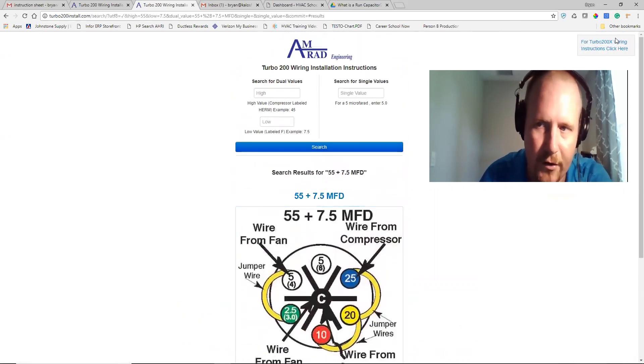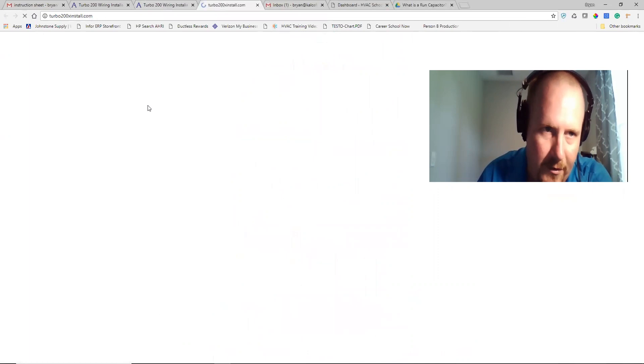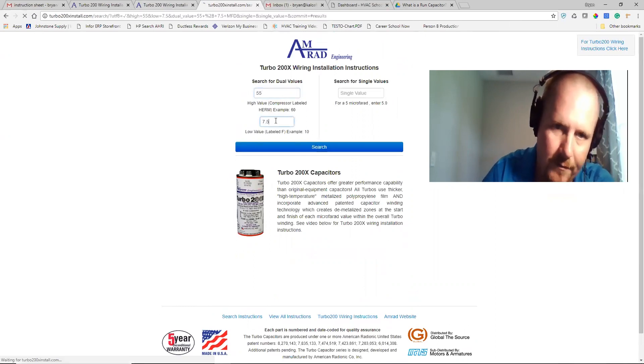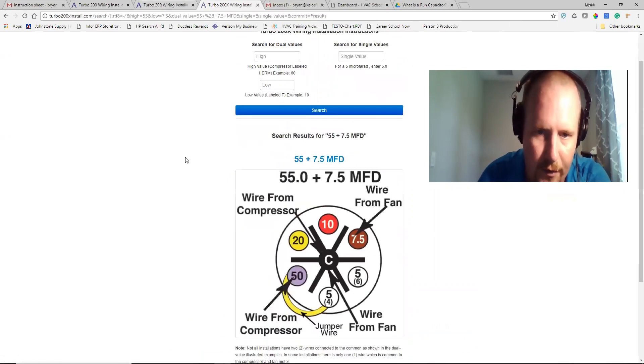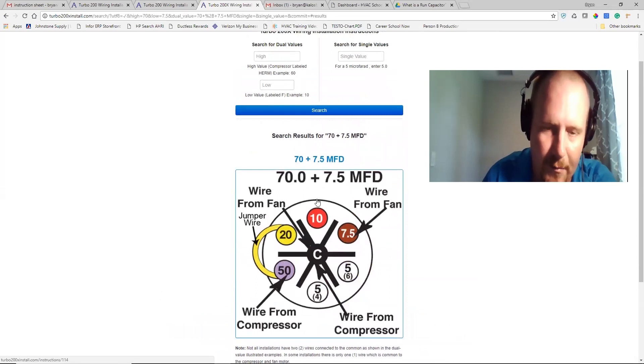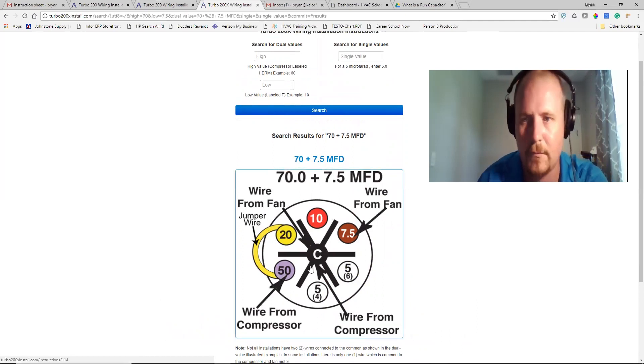If you want to do the Turbo 200X, they have a link up here to the top right. That's the larger version for larger sizes. Let's say you want a 55 by 7.5 on this one. There you go. 55 by 7.5. Let's say you want a 70 by 7.5. There you go. There's a 70 by 7.5. So 7.5 in the fan, 50 plus 20 equals 70. You always hook to the large, you connect your compressor, start winding to the larger reading. So you hook it to the 50, not the 20. It says that right in the install instructions. And then this is your commons.